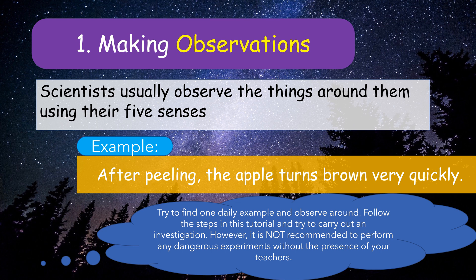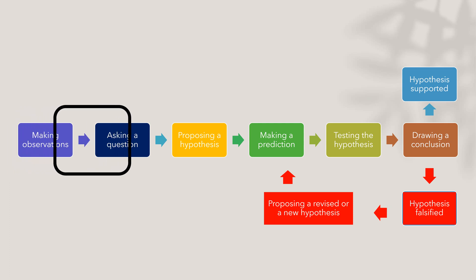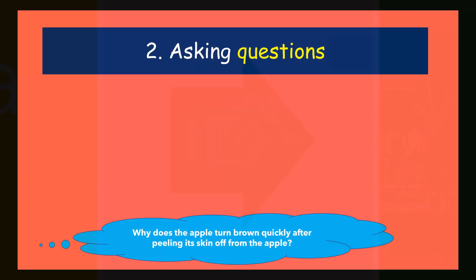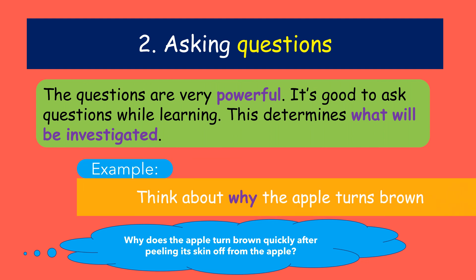Next step: asking a question. Questions are very powerful. It is good to ask questions while learning, as this determines what will be investigated. A good scientific question might be: why does the apple turn brown after peeling its skin off?